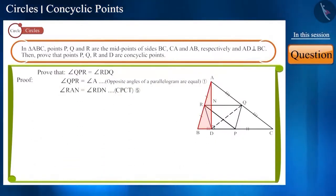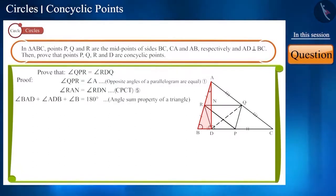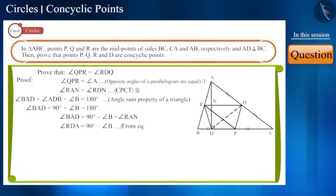In triangle ABD, according to the angle sum property of a triangle, we can write the sum of these three angles to be equal to 180 degrees. And you can see that angle ADB is a right angle. So, we can write angle BAD as 90 degrees minus angle B. Angle BAD and angle RAN are the same. That is, angle RDN or we can say angle RDA also will be equal to 90 degrees minus angle B.